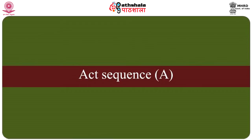Next we have act sequence. Act sequence refers to the precise words used, how they are used, and the relationship of what is said to the actual topic at hand. The former is labeled as the message form and the latter as message content. Many serious errors occur when there is a mismatch between form and content, because how something is said is part of what is said.